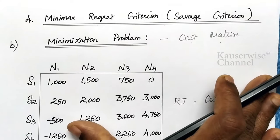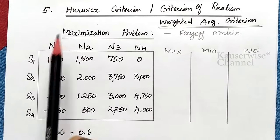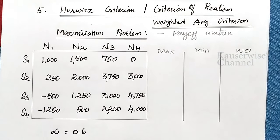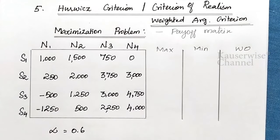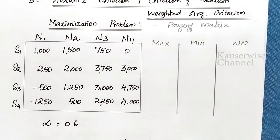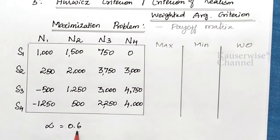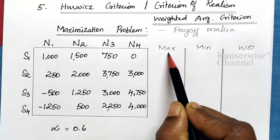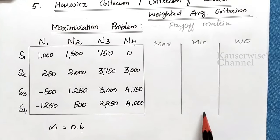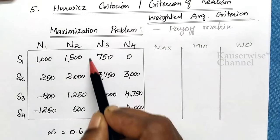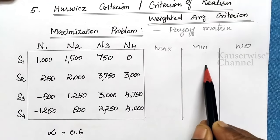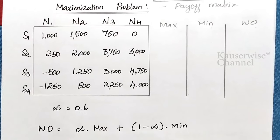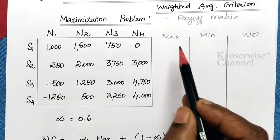Now let us see the last criterion — the fifth one, Horvitch criterion, otherwise called criterion of realism or weighted average criterion. We are going to see two problems: the first for maximization and the next for minimization. According to this criterion, you follow three steps: first, find the maximum value for each alternative; second, find the minimum value for each alternative; third, calculate the weighted outcomes using the formula.